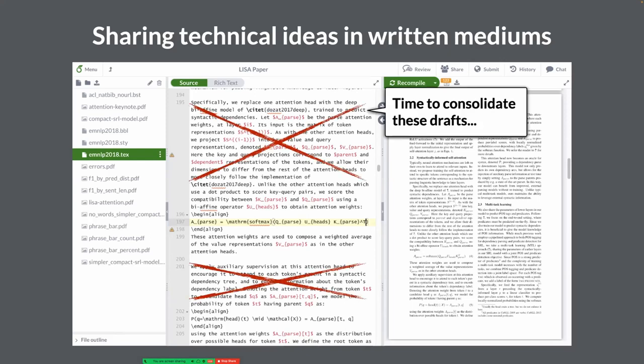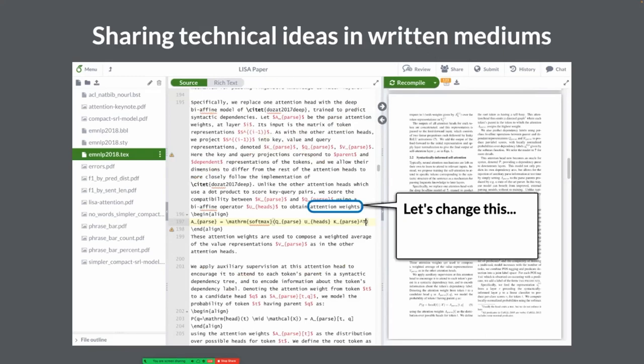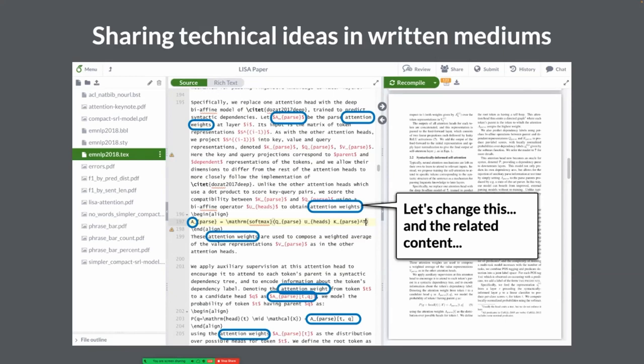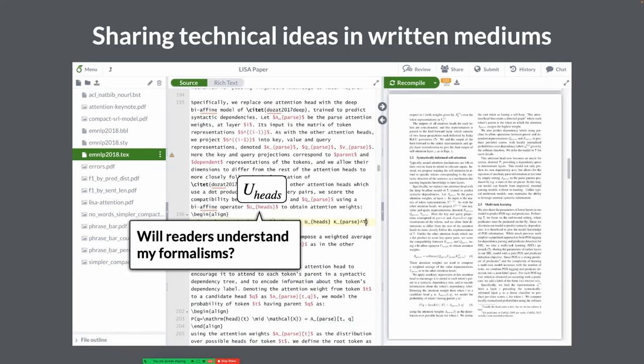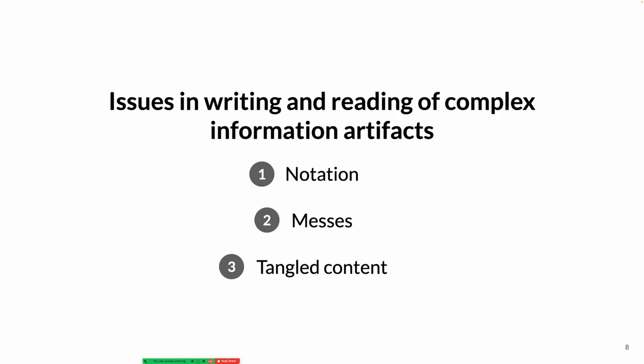They might spend some time consolidating draft material, trying to put together a more concise and compelling account of the ideas they want to share. They might also spend some time changing some of the concepts in their work — maybe changing a term for something like "attention weights." And when they do this, they then have to make changes everywhere else within their document in order to keep it consistent and tell a centralized story. They might also spend a lot of time thinking about formalisms to explain their ideas — for instance, the choice of notation, how to choose notation that is going to be understandable to the widest subset of their audience. Across all different types of complex information artifacts, these challenges of coming up with the right notation, dealing with the messes that arise, the exploratory authoring process, and dealing with tangled content come up time and time again.